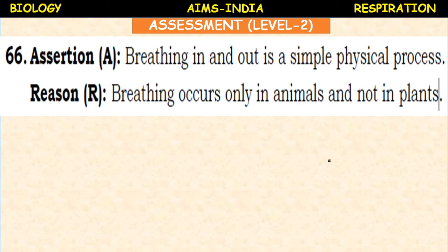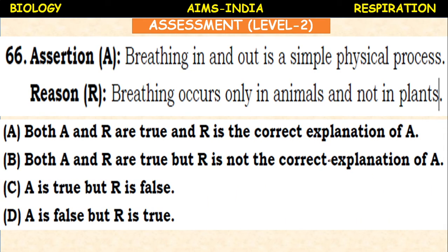Assertion-Reasoning question: Assertion — breathing in and out is a simple physical process. Reason — breathing occurs only in animals and not in plants. Both are correct and the reason is the correct explanation of the assertion, because breathing is a physical process that takes place only in animals.